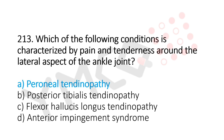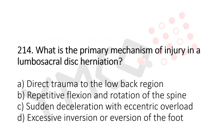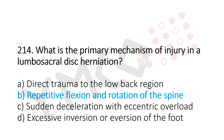Question 214: What is the primary mechanism of injury in lumbosacral disc herniation? Option A: direct trauma to the lower back region. Option B: repetitive flexion and rotation of the spine. Option C: sudden deceleration with eccentric overload. Option D: excessive inversion or eversion of the foot. The answer is option B, repetitive flexion and rotation of the spine.